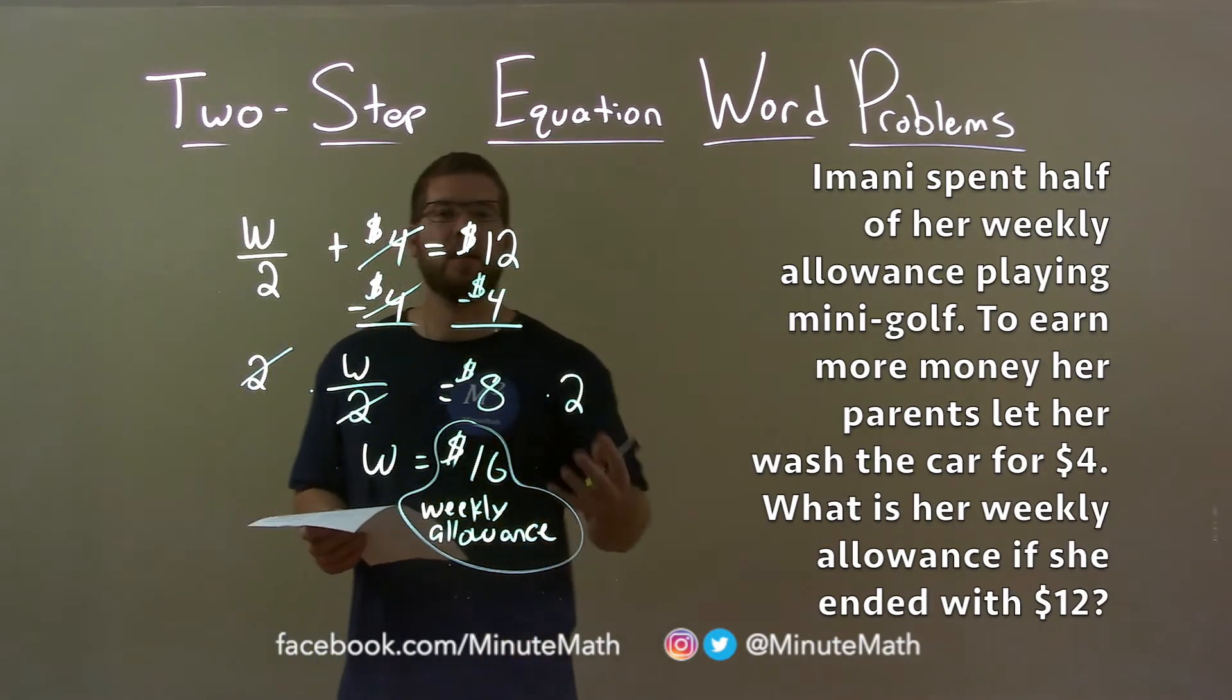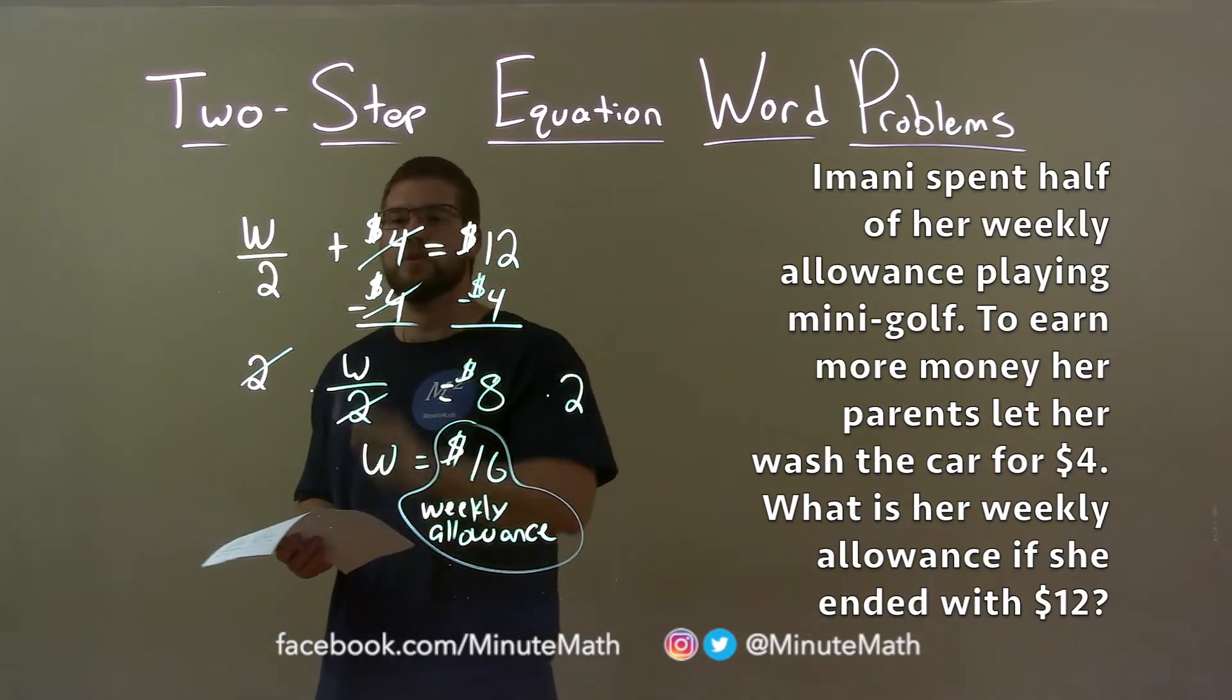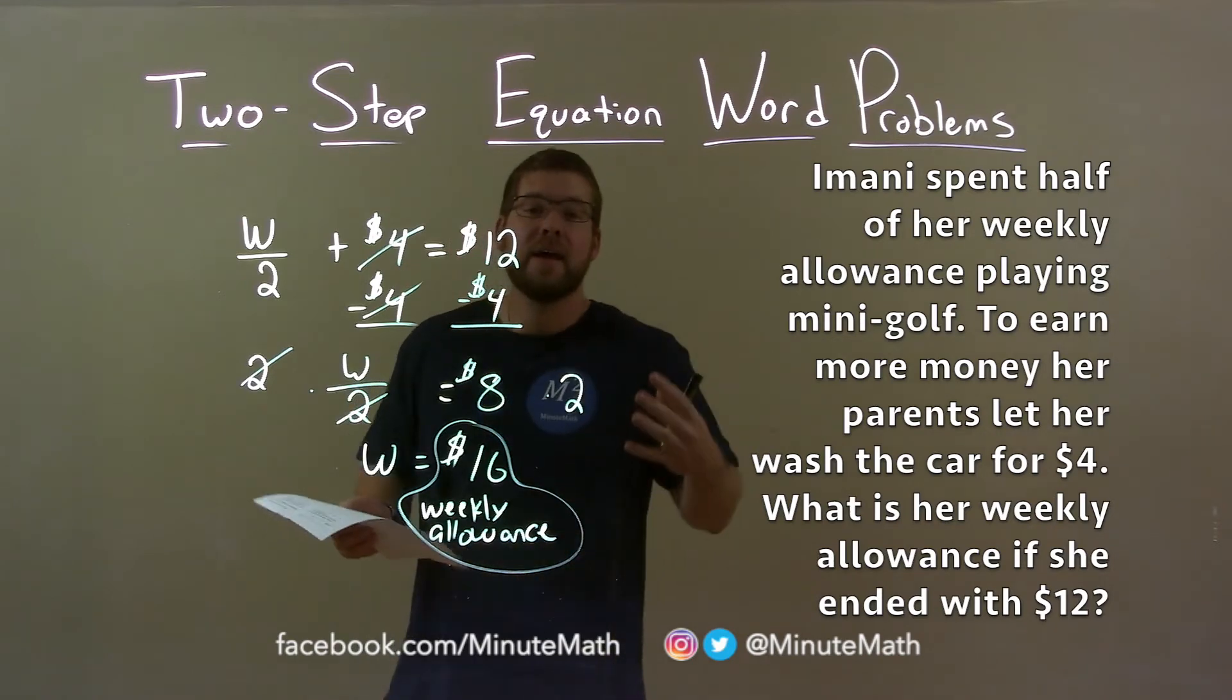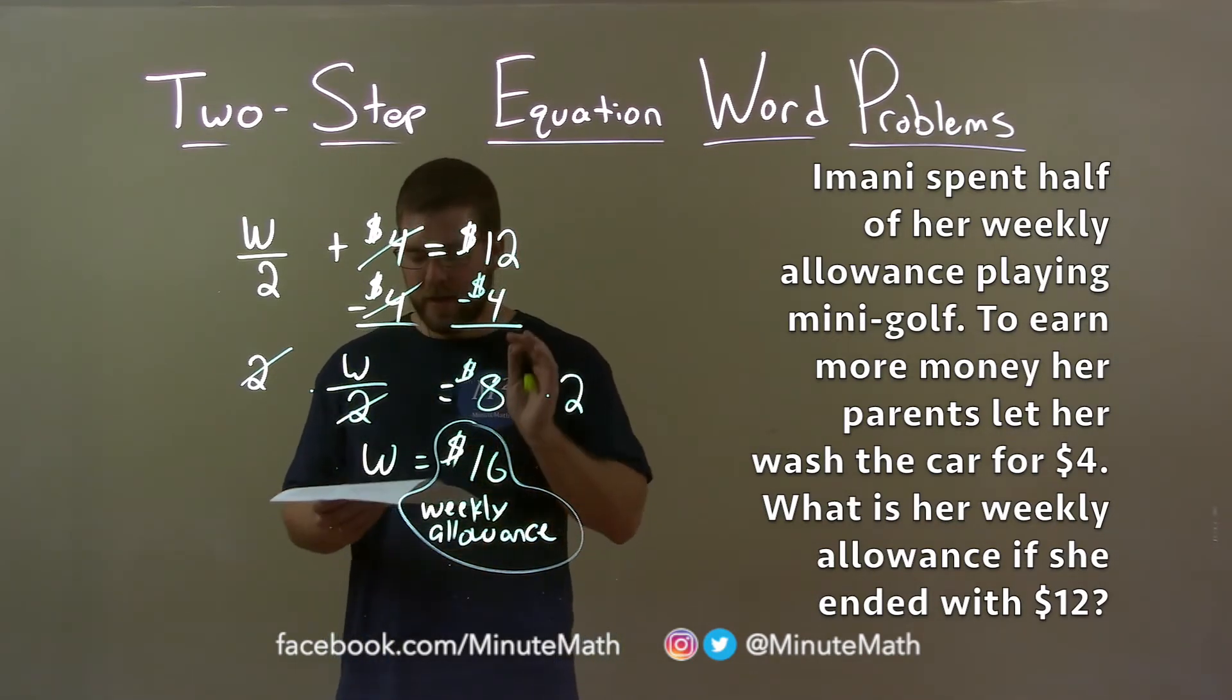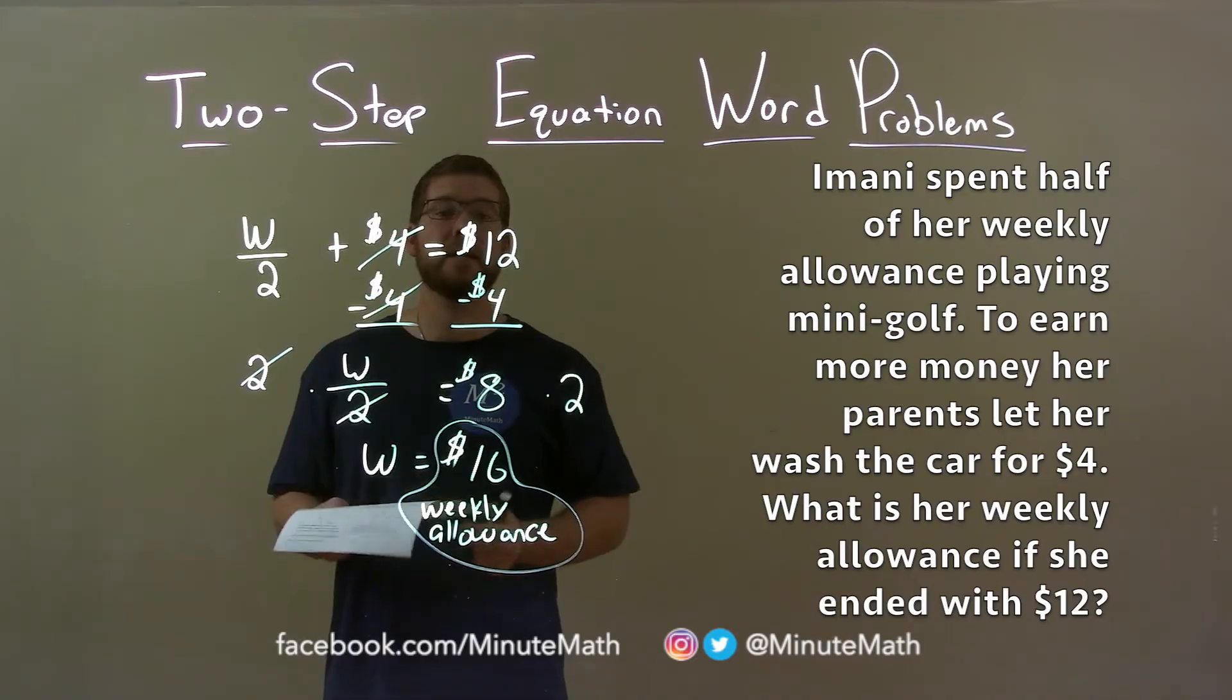With that information, I created the equation W over two plus four dollars equals twelve dollars. And then I solved for W. W being Imani's weekly allowance, which came out to be sixteen dollars.